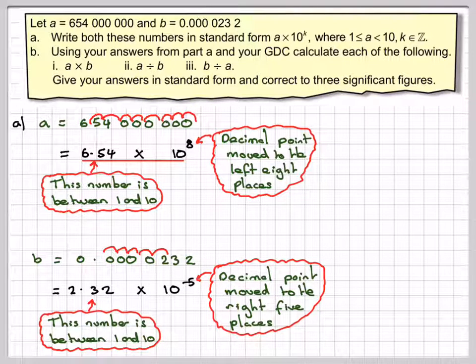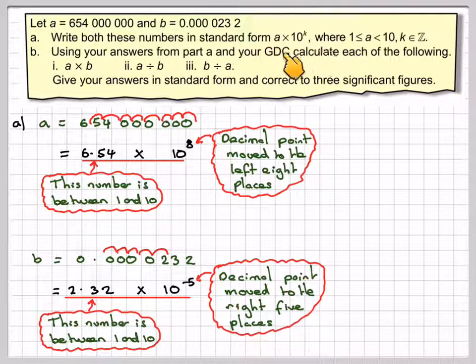So you need to have a little bit of understanding of negative indices before doing this. In order to do the calculations for the correct answer, 2.32, number between 1 and 10 times 10, and minus 5 is an integer.